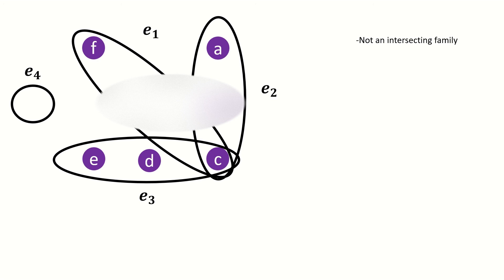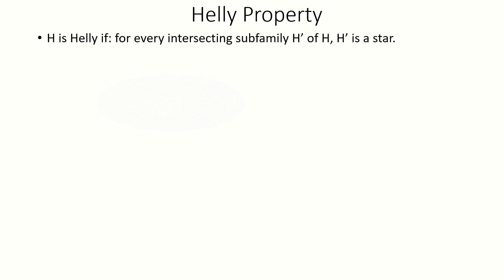We're now ready to state the Heli property for hypergraphs. We say that a hypergraph is heli if all its intersecting subfamilies are stars. If we want to show that a hypergraph is not heli, all we have to do is find a single intersecting subfamily that is not a star.